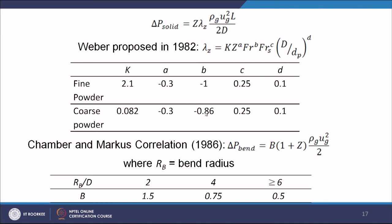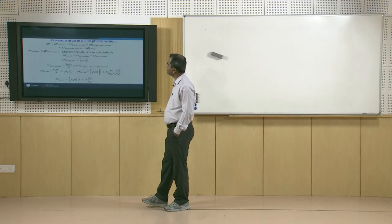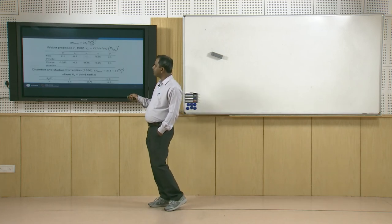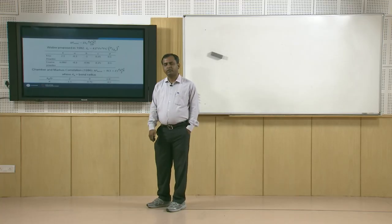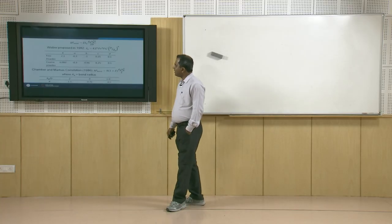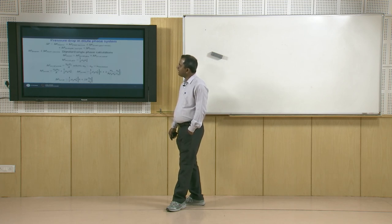For bend pressure drop, Marcus and Chamber (1986) proposed: ΔP_bend = B·(1 + Z)·ρ_g·u_g²/2, where B depends on the bend radius ratio r_b/D. If r_b/D = 2, then B = 1.5; if r_b/D = 4, then B = 0.75; if r_b/D > 6, then B = 0.5. This completes the pressure drop calculation for a pipeline carrying dilute phase gas-solid flow.